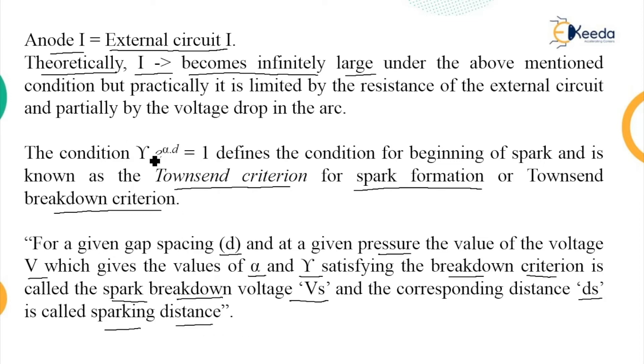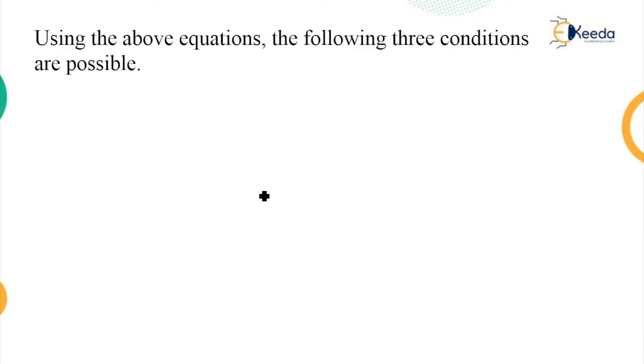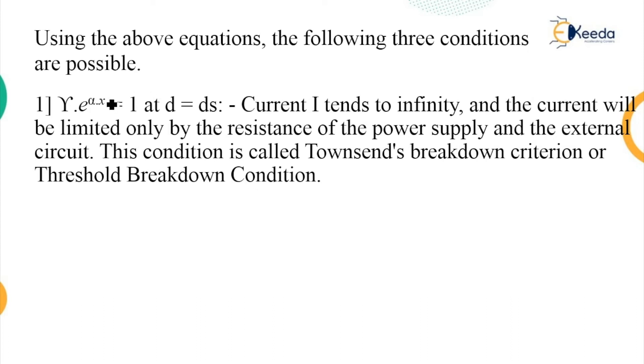Now this gamma e to the power alpha D equal to 1 has three conditions. The conditions are first when this gamma e alpha X or alpha D is equal to 1 at D equal to Ds, the current I tends to infinity. As I said, when we have this particular condition, that is when the denominator is equal to zero, the value of the current is equal to infinity and this particular current is limited only by the resistance of the power supply or maybe the external circuit.